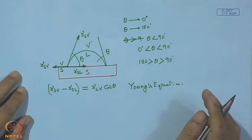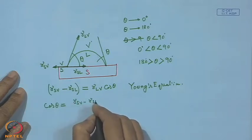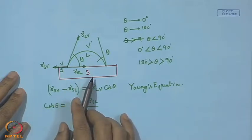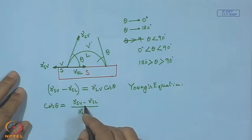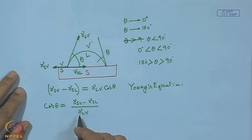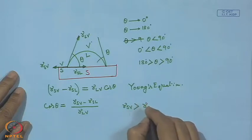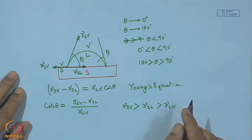This equation gives us a clear message: cos theta equals (gamma_SV minus gamma_SL) divided by gamma_LV. When we need spreading leading to theta approaching 0, this numerator value should be very high — gamma_SL should be as low as possible and gamma_SV should be quite high. For the favorable case of wetting we write: gamma_SV greater than gamma_SL, which is greater than gamma_LV. That is the condition which must be met for a liquid to have good or favorable wetting characteristics.